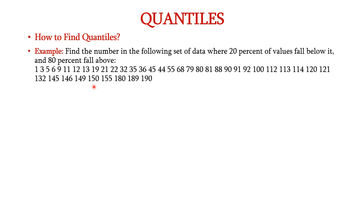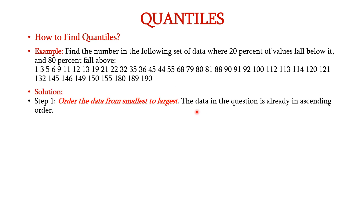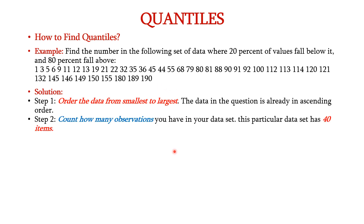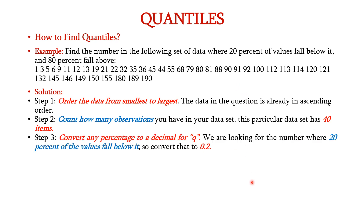Let us see how to find quantiles using an example. We have some data and we have to find the number where 20 percent of values fall below it and 80 percent fall above it. Step 1: sort the data from smallest to largest — the data is already sorted. Step 2: count the number of observations — total observations is 40. Step 3: convert any percentage to a decimal for q. So 20 percent is represented as 0.2, which is the value for q.